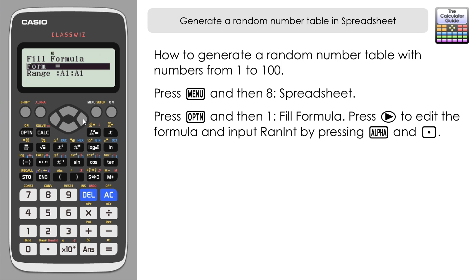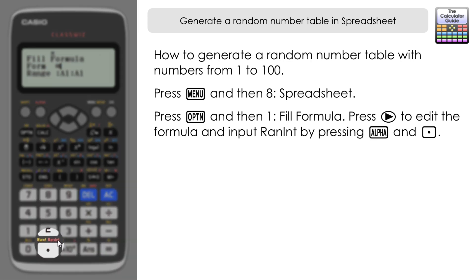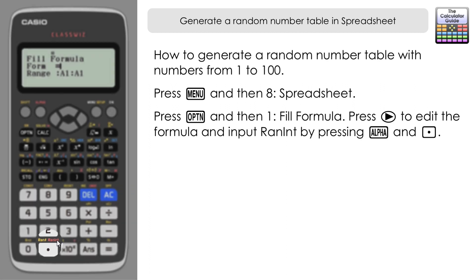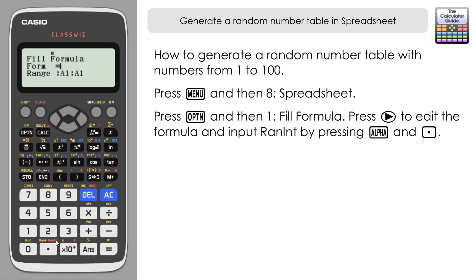Press right to edit the formula. This is where we're going to tell the ClassWiz that we want to produce random integers. There is a feature that enables you to generate random integers, RanInt#. It's one of the alpha functions just above the decimal point button. Press Alpha and then the decimal point to get random integer and then a set of open brackets.